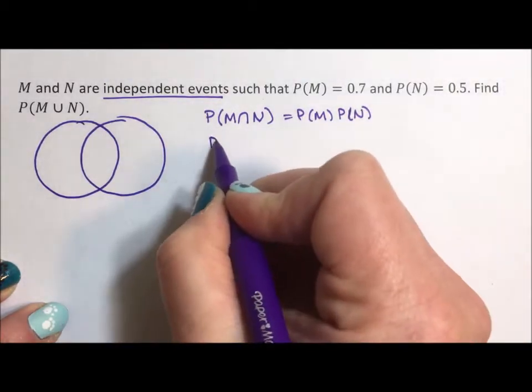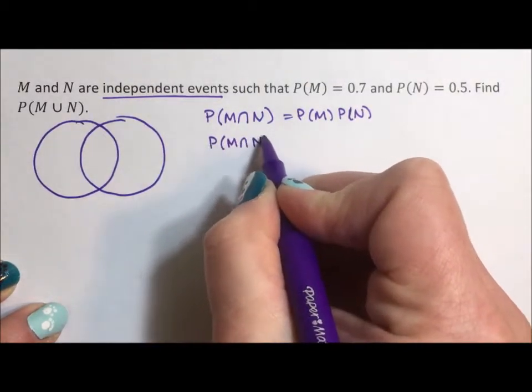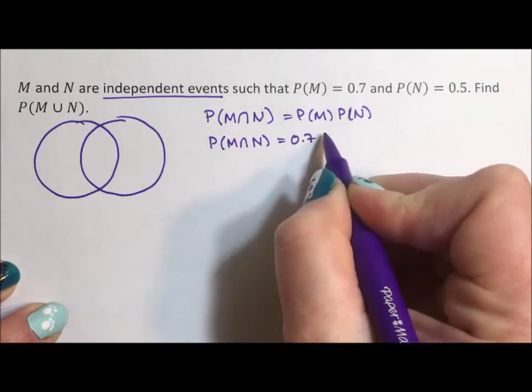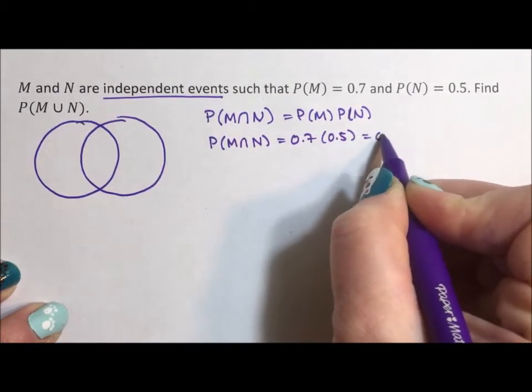So that means the probability of the intersection is equal to 0.7 times 0.5, which is 0.35.